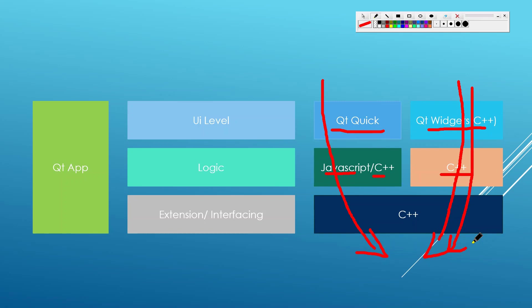But you can also use both. For example, for one application we are building for a client, we use both: a Qt Widgets user interface for desktop and a Qt Quick user interface for Android and embedded. We decide which user interface is displayed at compile time when we are compiling the application.